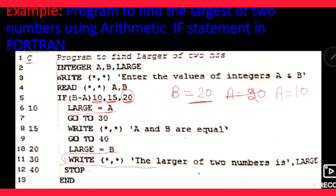Next is STOP and then END. Is pe 40 number de rakha hai, aur yahan STOP likha hai. Dekho, jab WRITE statement likhi thi — 'A and B are equal' — uske baad GO TO 40 likha tha. Matlab, yeh print hone ke baad, program ko STOP bhi karna hai aur END bhi karna hai. To jo GO TO statement use karte hain, uske baare mein aap next lectures mein padhenge. Ek statement ke baad agle statement execute hoti hi hai, lekin agar hum chahte hain ki kisi particular statement ke baad kisi aur statement ko execute karwana chahte hain, to uske liye GO TO statement use karenge.